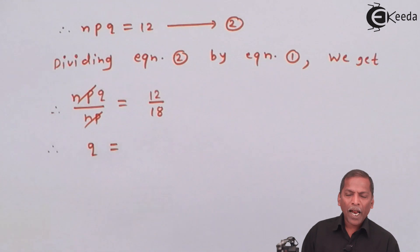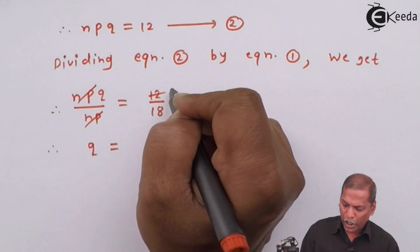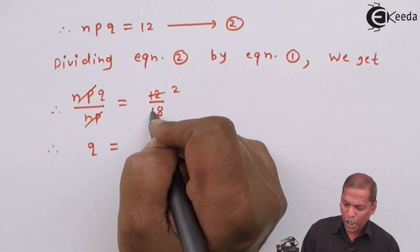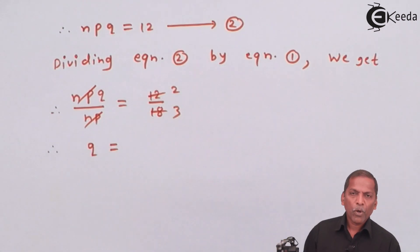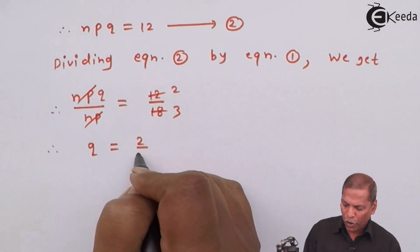Now, on RHS, we go for cancellation that 6 to the 12 and 6 to the 18. So therefore, q equal to 2 upon 3.